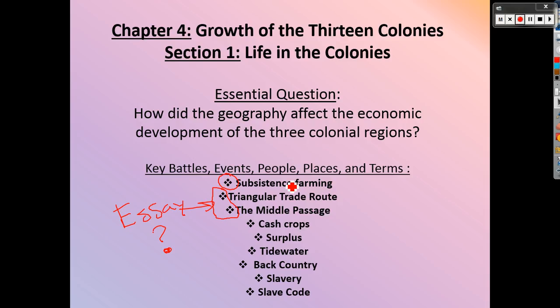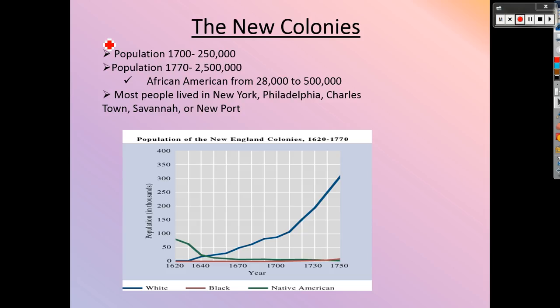The essential question is how geography — the way different parts of the country are laid out, between soil, rivers, open land versus mountains — really affects the development of the three different colonial regions. That's how we get businesses in the north, some farmland in the middle, and then huge plantations in the south, which is why we get to all of this stuff about slavery.